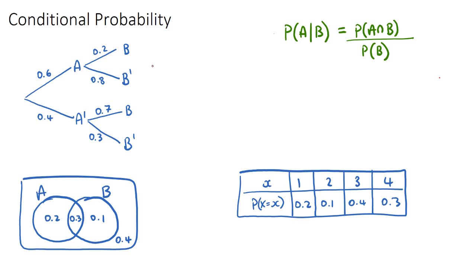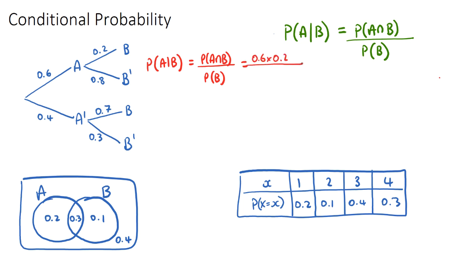In this question, we want to find the probability of A given B. Using our formula, we know this is the probability of the intersection of the two over the probability of the given-that event. In a tree diagram, we can find the intersection by multiplying our branches, so it will be A and B: 0.6 times 0.2.